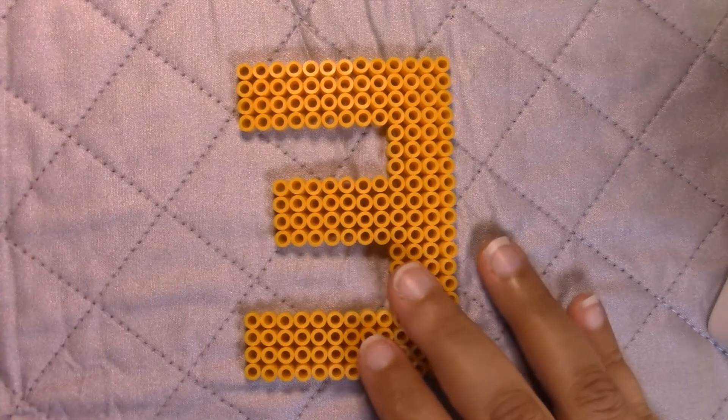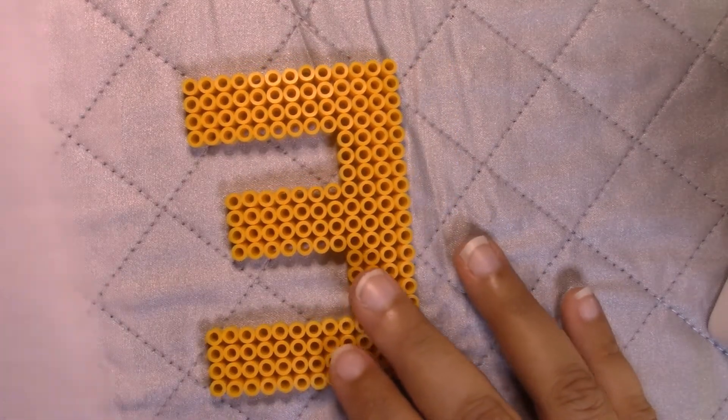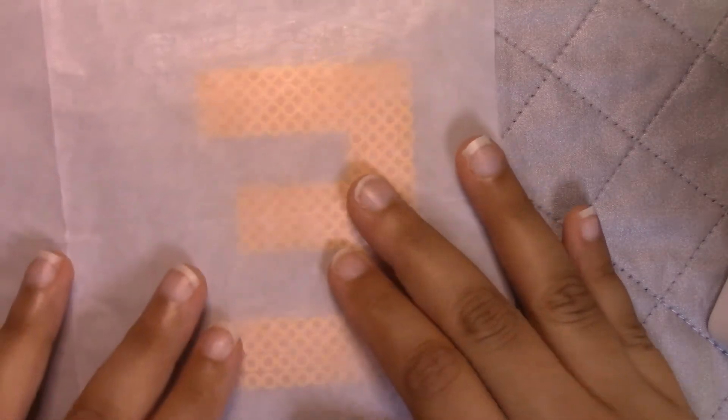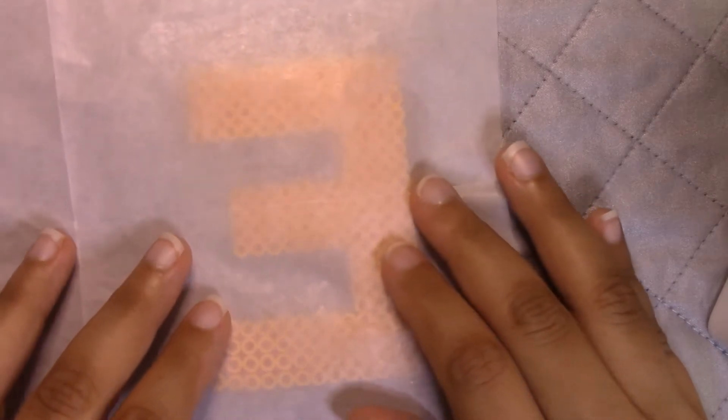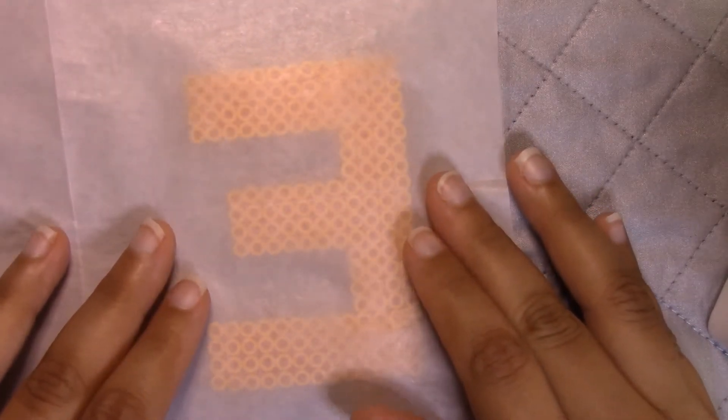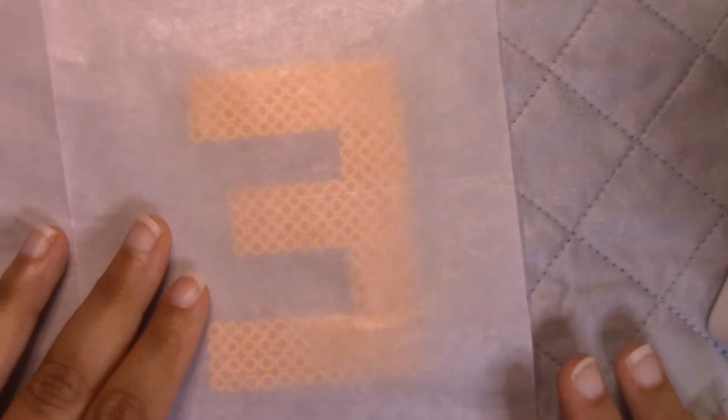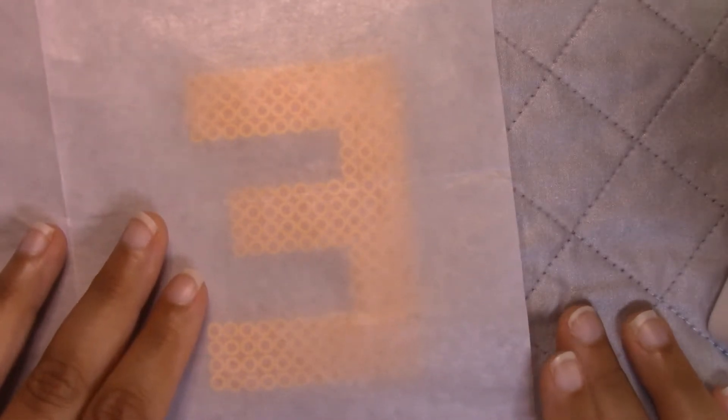And you're going to fuse the back the same exact way that you did the front. So you'll just take your parchment paper, place it over it, and iron in that circular motion again. This is super important to have a surface that is okay to be ironed on.